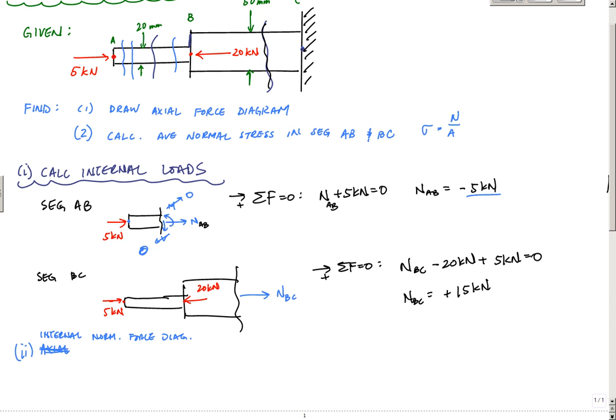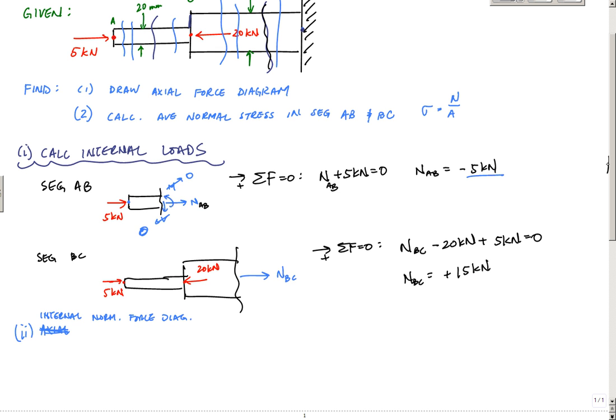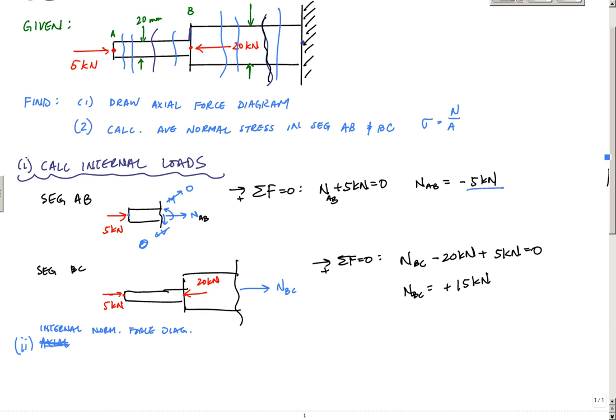And then no matter where I cut here in segment BC, I also know it's going to be a constant 15 kilonewtons. So that kind of gives me a clue that, hey, you know, I'm probably going to have a straight line, a constant. So if I were to draw this right here – so let me draw lines that kind of match up here – I want to draw lines right here.